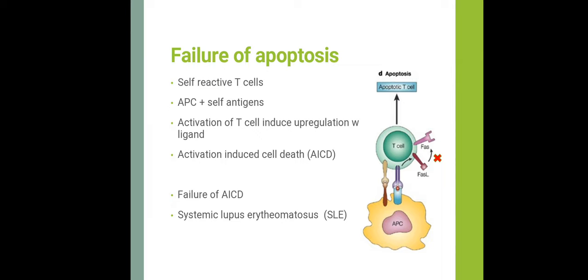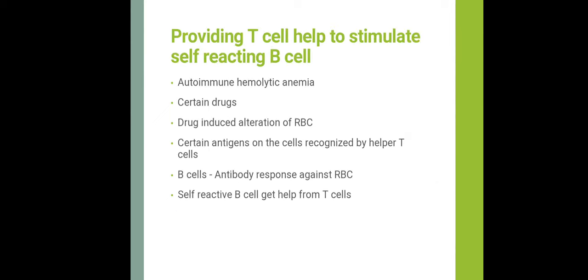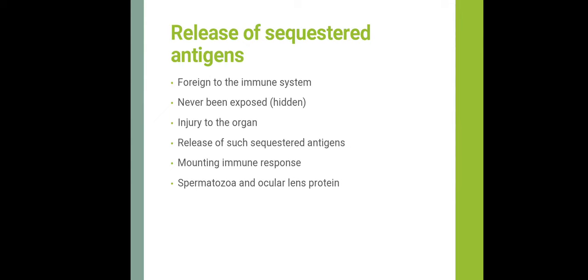Failure of apoptosis occurs when auto-reactive activated T-cells fail to undergo activation-induced cell death (AICD) via the Fas/Fas-ligand pathway, leading to autoimmunity. This is observed in patients with SLE (systemic lupus erythematosus). T-cell help to self-reactive B-cells can also drive autoimmunity — for example, in autoimmune hemolytic anemia, drugs such as penicillin alter red cell surface antigens that are then recognized by helper T-cells.